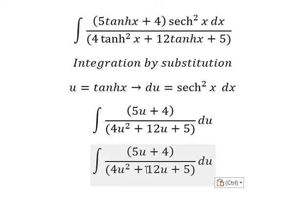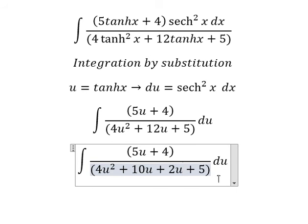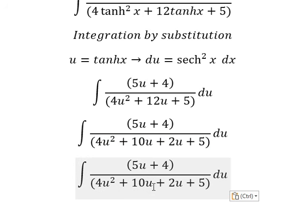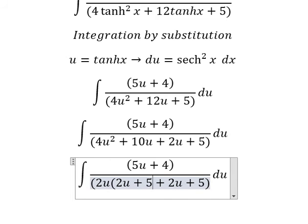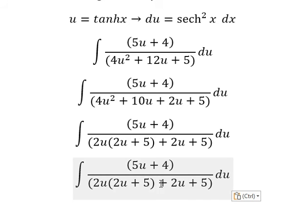Next, about 12u I can put into 10u and 2u. Next we can do factorization by 2u. Next we can do another factorization by 2u plus 1 and 2u plus 5.